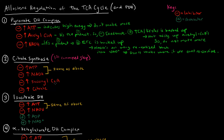High levels of succinyl-CoA also inhibit citrate synthase. If there's a buildup of succinyl-CoA, that means it's not going further in the TCA cycle — it's not being converted into succinate. This could indicate that the Krebs cycle is not going to completion; the cycle is backed up. So we don't want to commit to the pathway if it's backed up.